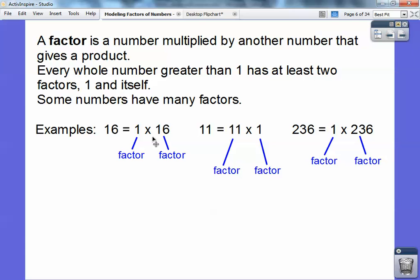So, 16, factors of 16, 1 times 16 equals 16, so 1 and 16 are factors. And same with 11, 11 times 1, those are factors of 11. 236, factors of 236 are 1 and 236. Now, I know you can probably think of other factors that go into 16, and that's terrific. We'll talk about that in just a second. There's all kinds of factors here, I think, I don't know. It'd take a while to break that down.